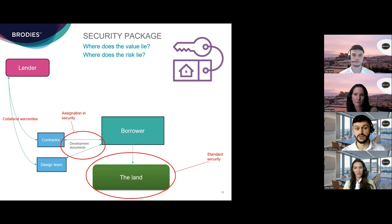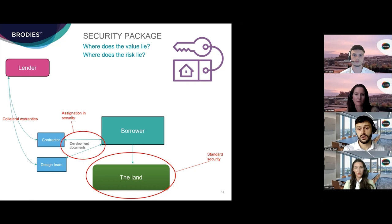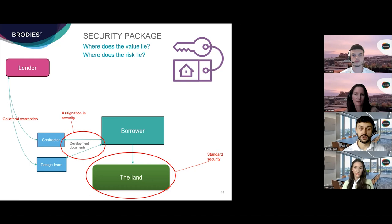Collateral warranties aren't strictly speaking security documents as there is no underlying asset being secured — rather, they are direct agreements between the lender and the development counterparty which create a direct contractual relationship. Collateral warranties give the lender the benefit of direct obligations and undertakings, such as that the counterparty will carry out its responsibilities with reasonable skill and care. They also usually provide for step-in rights, which allow the lender to step into the borrower's shoes and finish the development if the borrower becomes insolvent or otherwise breaches the terms of the loan.